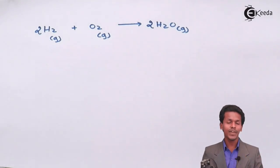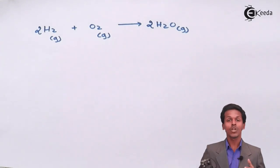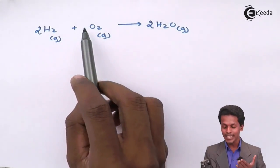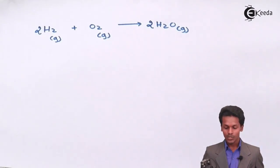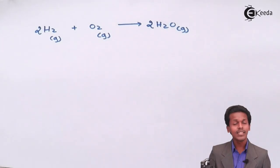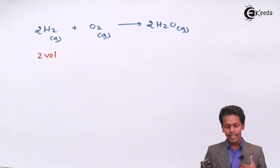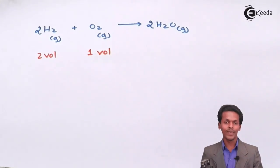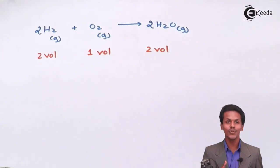This is a straightforward reaction that you should know. According to Gay-Lussac's law, 2 volumes of hydrogen react with 1 volume of oxygen to give 2 volumes of water vapor. So the volume ratio is 2 : 1 : 2 for H₂ : O₂ : H₂O.